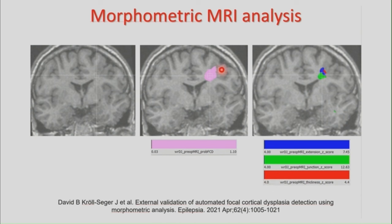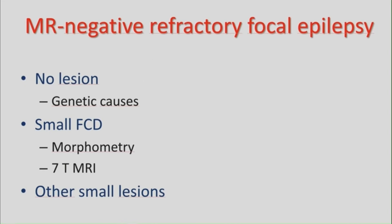The probability FCD map is a new feature obtained by an artificial neural network classifier for robust automated detection of FCDs based on these morphometric maps. When confronted with MR-negative refractory focal epilepsy, there may be no lesion, a genetic cause, a small focal cortical dysplasia requiring morphometry or seven-tesla MRI, or other small lesions.